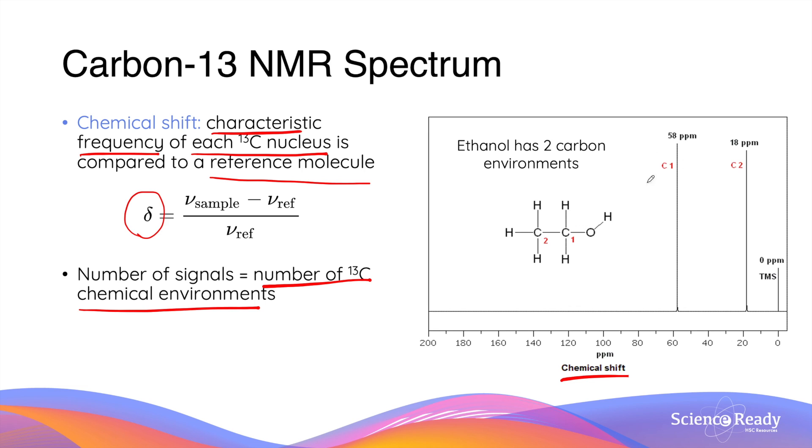This is why carbon-1 has a greater chemical shift compared to carbon-2 resulting in the presence of two separate signals in a spectrum.